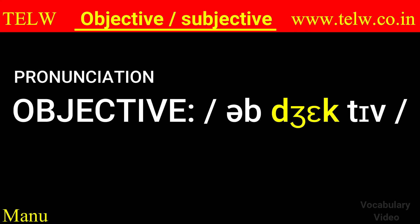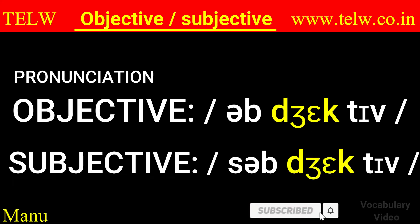Pronunciation — how do you pronounce the words? It's objective — the second syllable is stressed. Subjective — again, the second syllable is stressed.